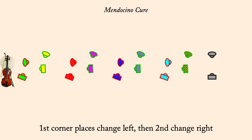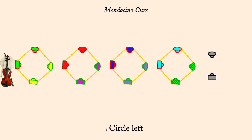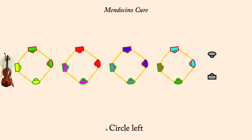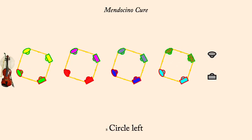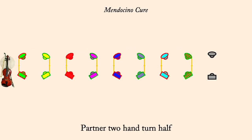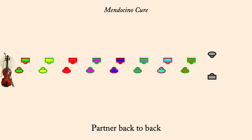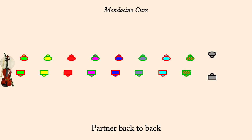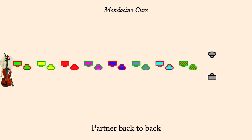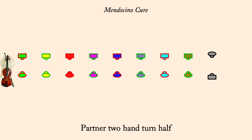Circle left. Partner two-hand turn half. Partner back-to-back. Partner two-hand turn half.